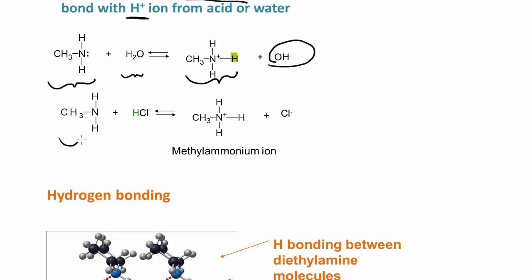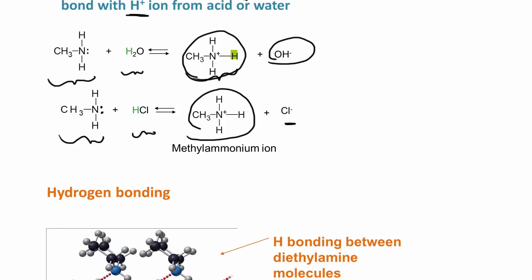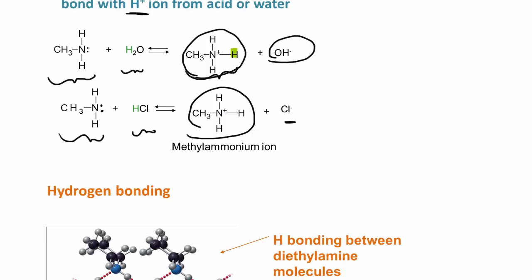We can also react the amine with an acid. It'll pick up the proton from the acid — remember, there is a lone pair of electrons here. Here we have this methylammonium ion. This is a methylammonium ion and the chloride ion. So this is just like any acid-base reaction we've talked about before with a weak base.